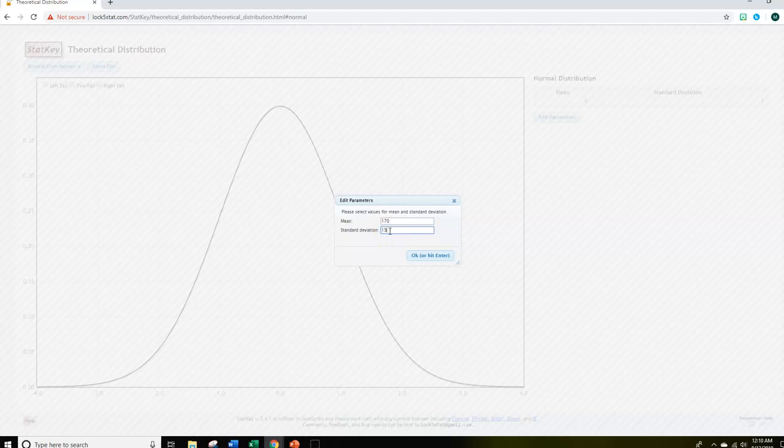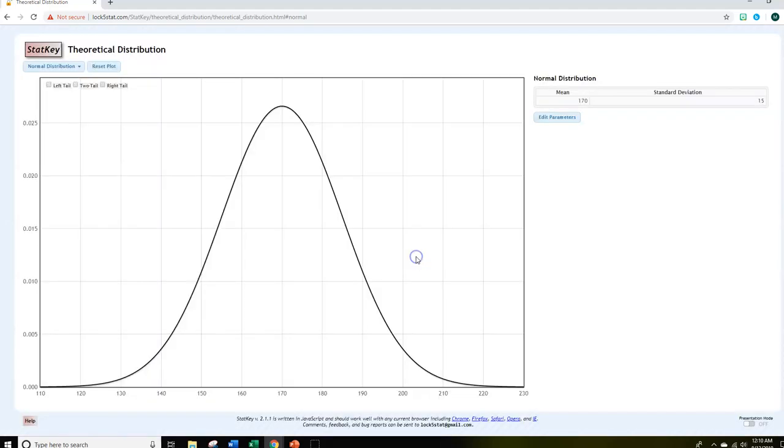Edit our parameters. So click that and put in a mean of 170 and a standard deviation of 15. These were, I think, the same values I had used in the previous video. So these would be assuming these are not already Z-scores, that these are some real life variable and they've given you a 170 and a standard deviation. I'm going to click OK.